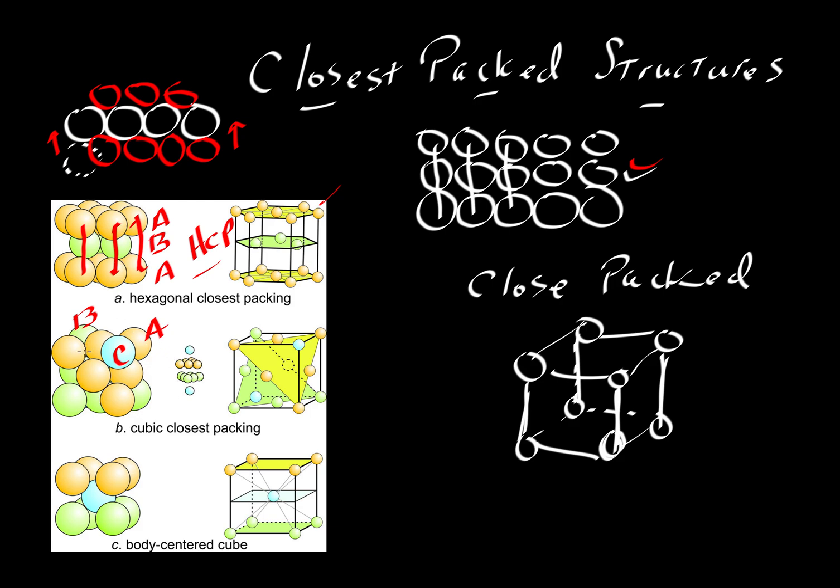So in this case, we get three layers, an ABC structure. And in that case, we call it a CCP structure or cubic closest packed. And it's a cubic closest packed because you can work out a face centered cubic structure as shown here.